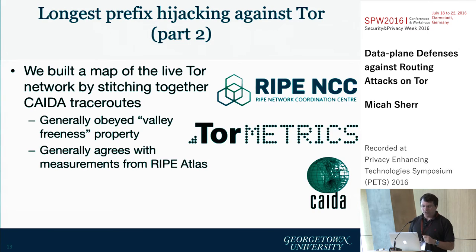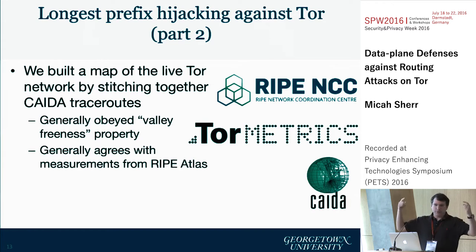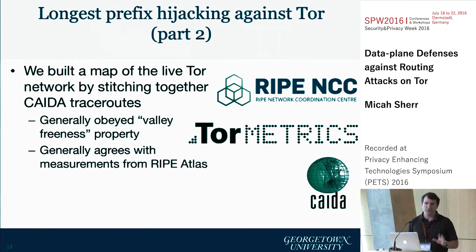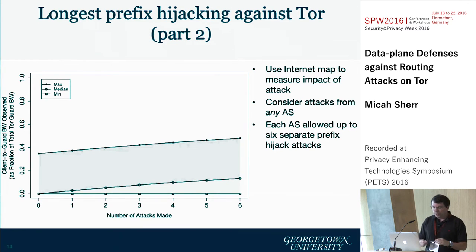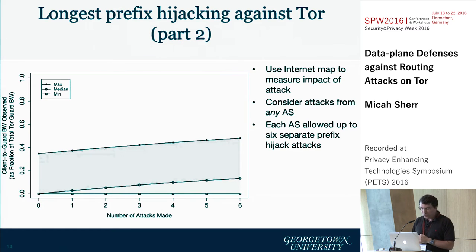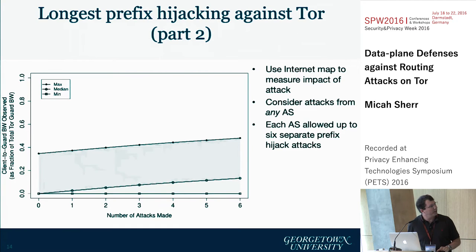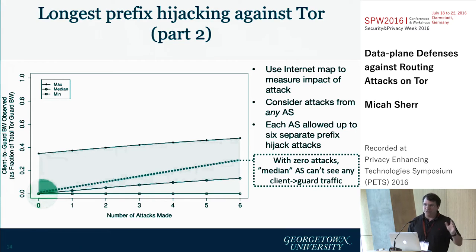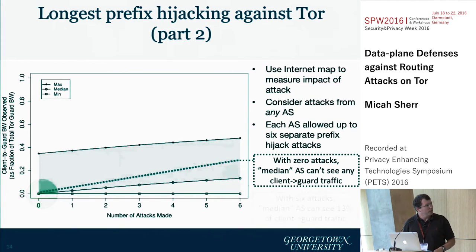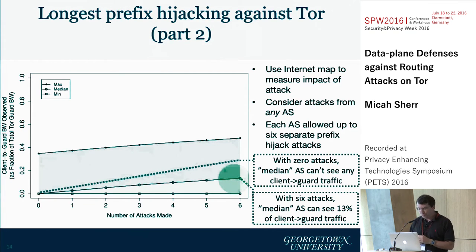One thing we did in this work is build a map of the live TOR network. We did this by taking trace routes from CAIDA — a great service with distributed vantage points of the internet — and stitching these things together. We verified it using RIPE and some other sources to show that this is generally an accurate map. Then we considered adversaries willing to launch anywhere from one to six BGP attacks against TOR, and looked at, for all ASes on the internet, what is the increase in TOR traffic they're allowed to see. Without any attack, the median AS can't see any client or guard traffic. But with only six attacks, your average autonomous system can see 13% of client-to-guard traffic — an increase of about 13%.